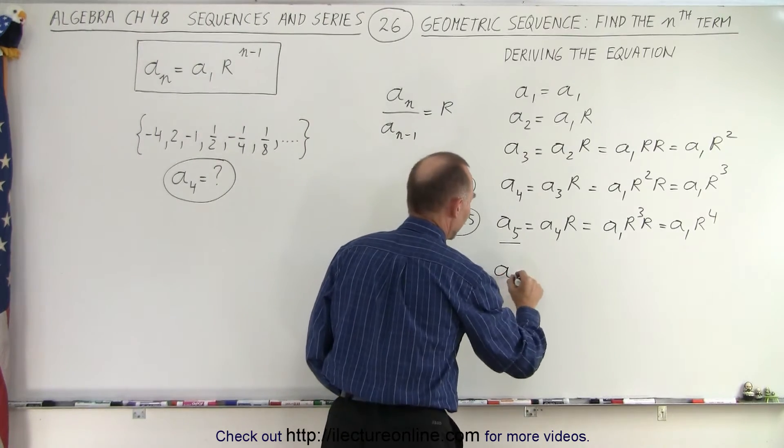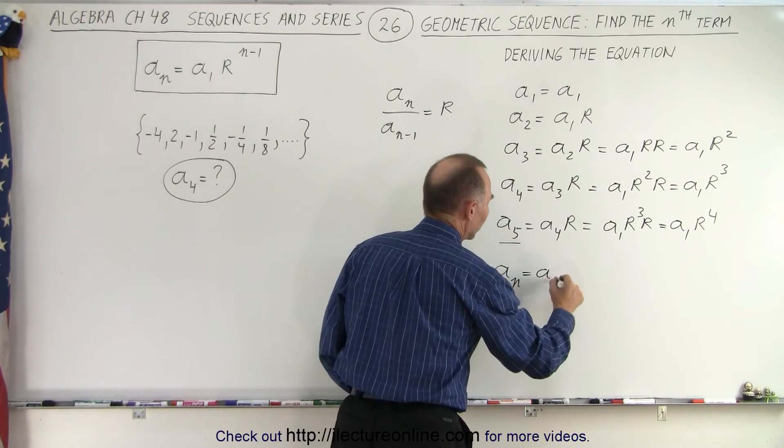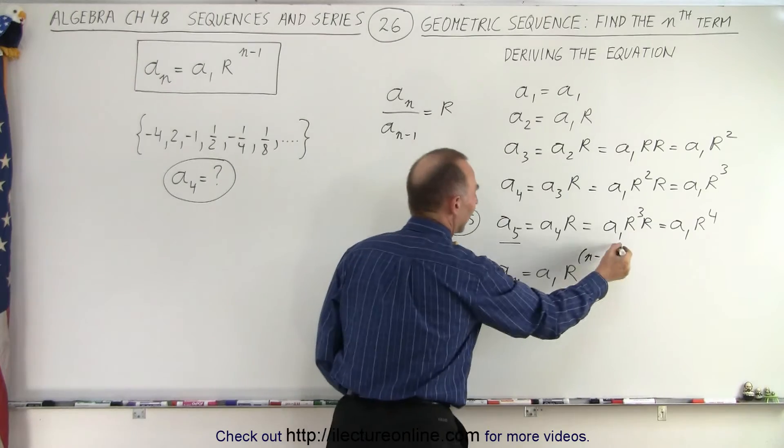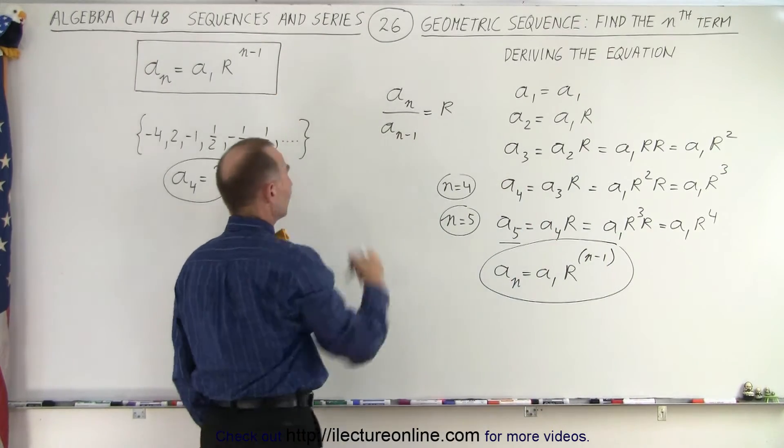And so therefore we can say that a_n is equal to a_1 times r to the exponent n minus 1. And that is where this equation came from.